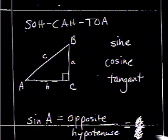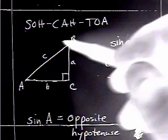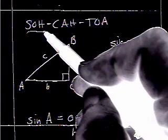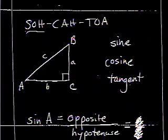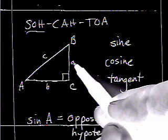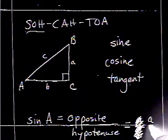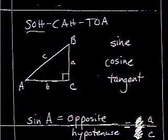The sine of angle A, abbreviated S-I-N of angle A, is the opposite divided by the hypotenuse. That's how we get these three letters up here in the abbreviation SOH-CAH-TOA. Opposite would be A. Hypotenuse is always C. So, that would be A over C.